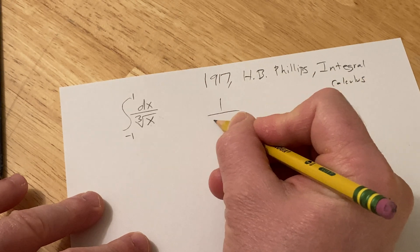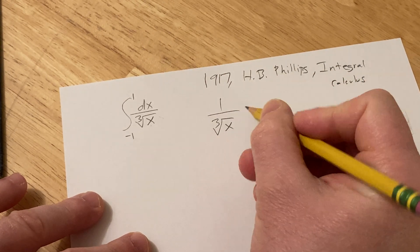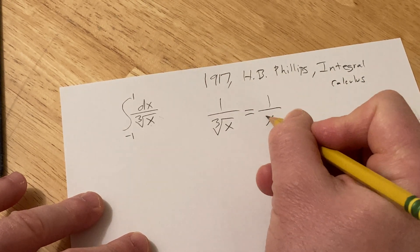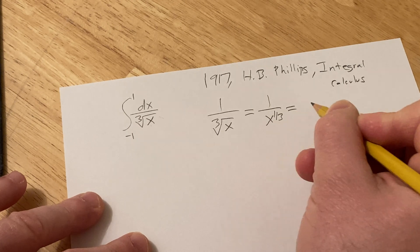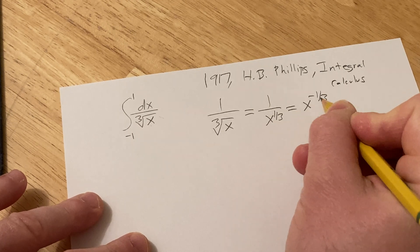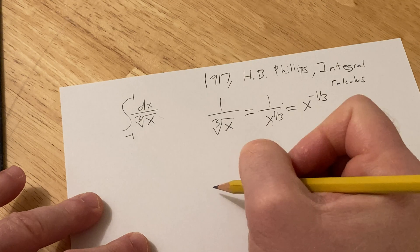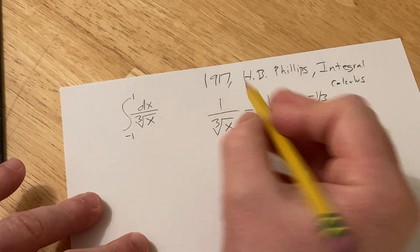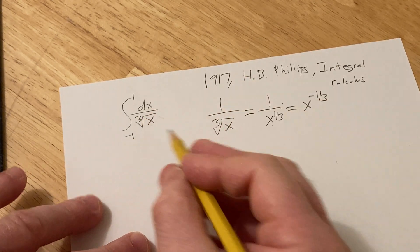Also note that the integrand is one over the cube root of x, which is one over x to the one-third, which is x to the negative one-third, because if you bring it upstairs the exponent becomes negative. I'm going to incorporate that when we break it up.